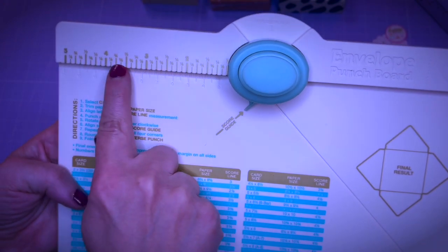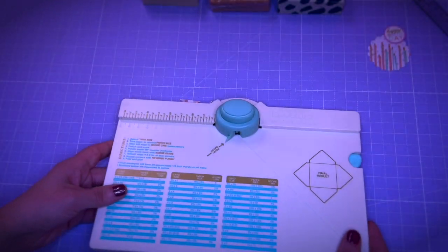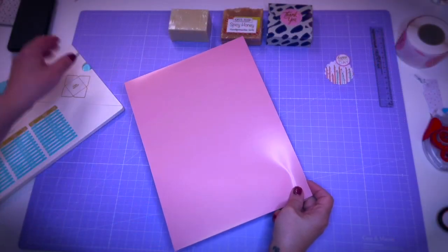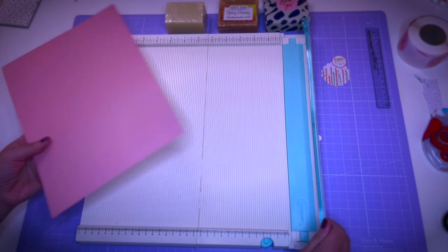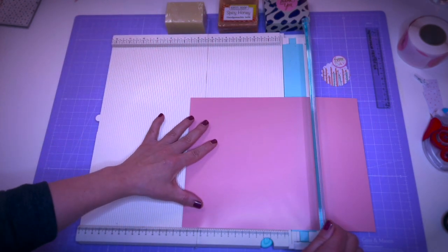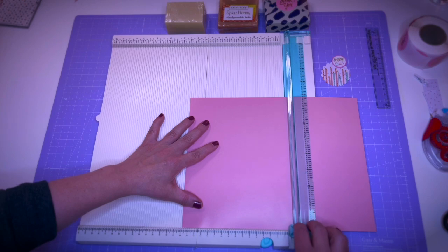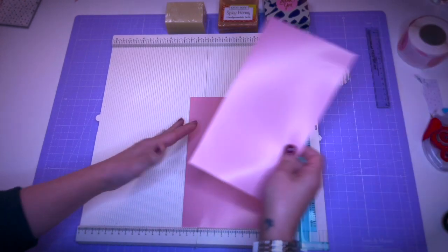Again here are the markings for inches and here the ones for centimeters. Okay, so first of all we need to cut down the paper to size determined by the calculator. This applies for both width and length of the paper, so we will have a square paper. In my case it is 15.9 centimeters.